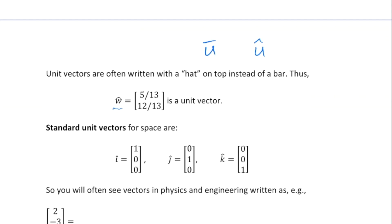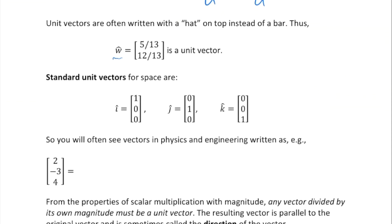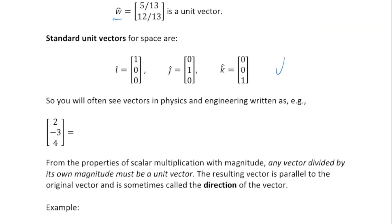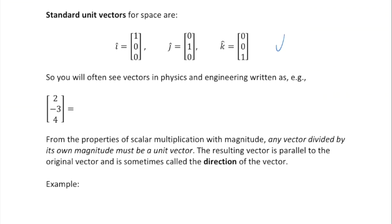Here are some standard unit vectors for space: i, j, k are [1,0,0], [0,1,0], [0,0,1] respectively. Those are the unit vectors in the positive x, positive y, and positive z directions. You'll often see in physics vectors written in terms of i, j, and k.